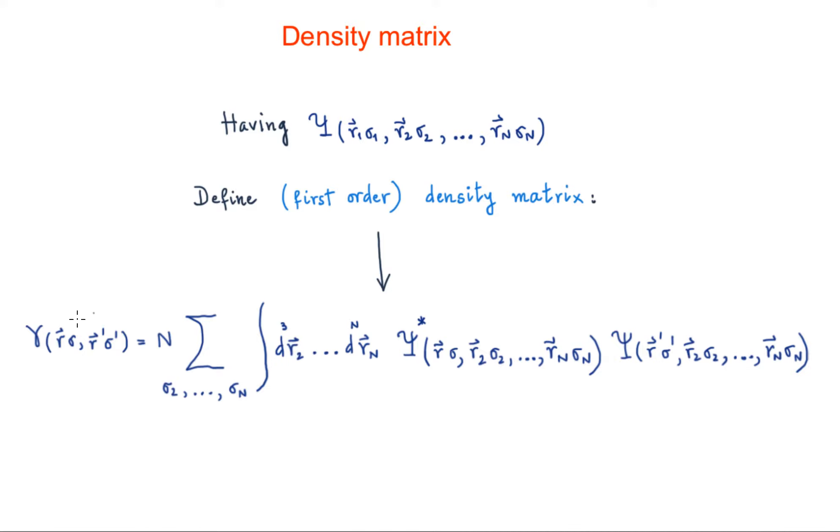This is the density matrix which depends on r sigma and r prime and sigma prime. It has n as the number of electrons. Here we have a summation of spin variables from sigma 2 to sigma n.